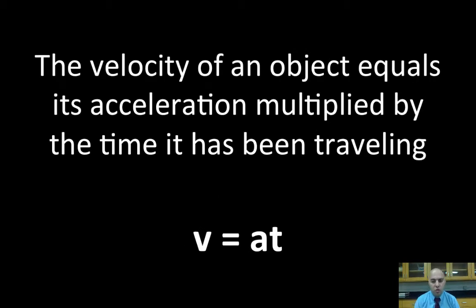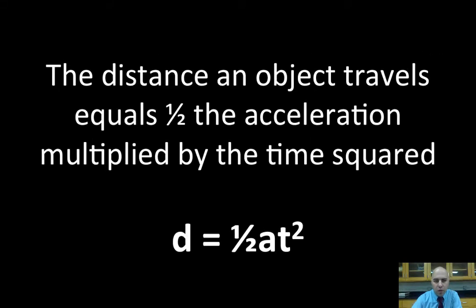What we're going to do is talk about two different equations that we can use when solving problems related to acceleration. The first one is V equals AT, or in other words, the velocity of an object equals its acceleration multiplied by the time that it's been traveling. The other one is D equals one-half AT squared. In other words, the distance an object travels equals half the acceleration multiplied by the time it's been traveling squared.